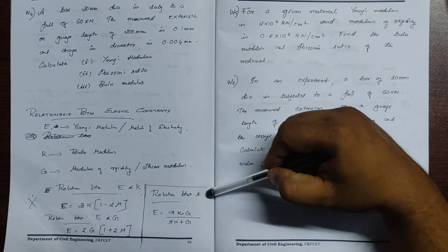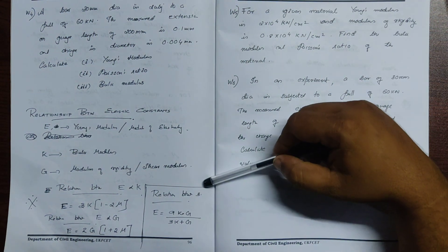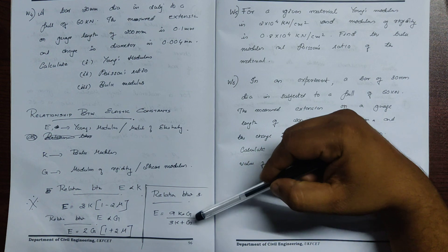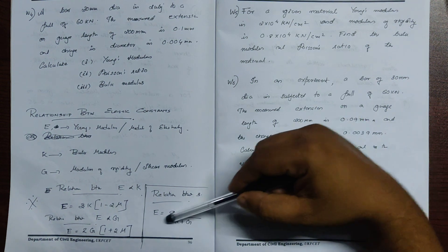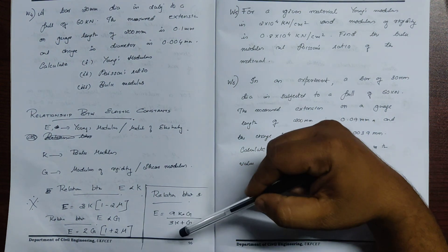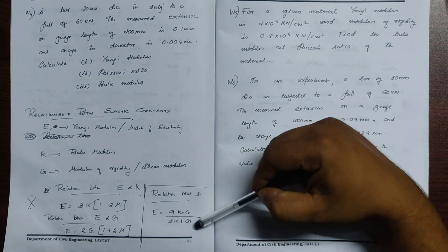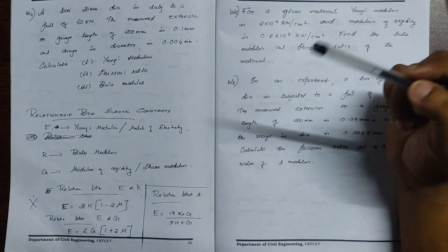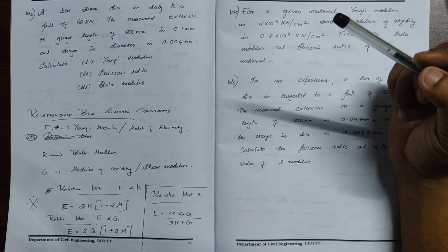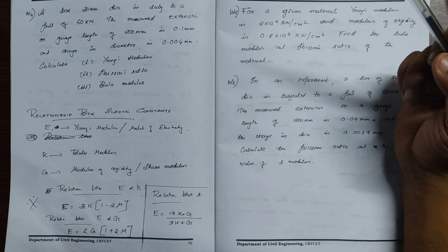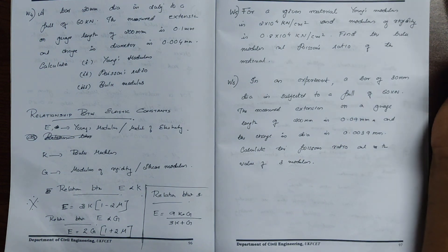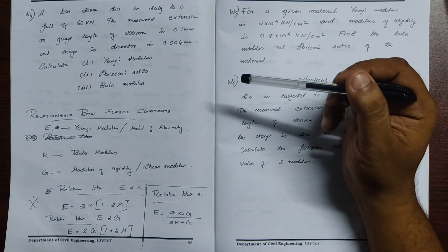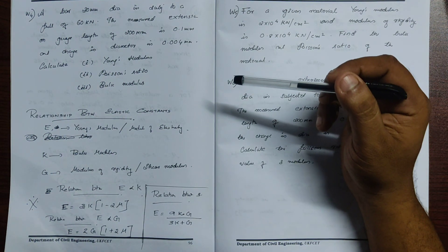The combined relation between all three moduli is: E is equal to 9KG divided by the denominator 3K plus G. That is, E = 9KG / (3K + G).